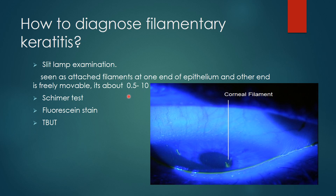During blinking, due to the freely movable end, the patient complains of pain. The Schirmer test is used for dry eyes — if the result is positive to a certain extent, this indicates dry eye condition. The TBUT (tear breakup time) test is also used for dry eyes, which will be explained in the next video.